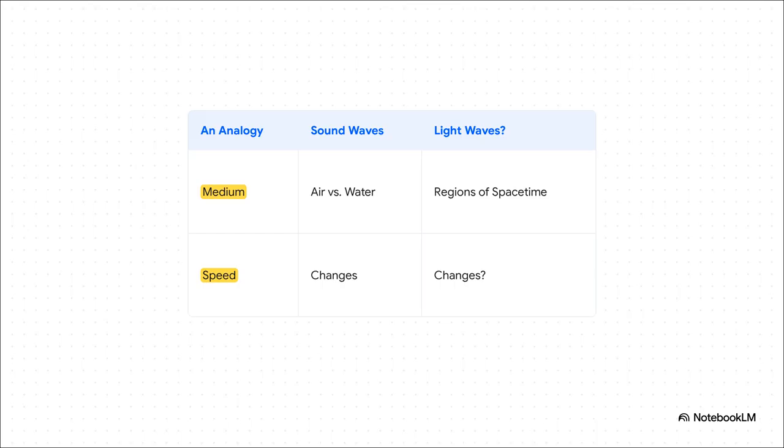Think about the speed of sound. We all know it travels at one speed through the air, but it travels way faster through water. Why? Because the speed depends on the medium it's traveling through. Well, this new theory proposes something kind of similar for light, that space-time itself isn't totally empty. It's filled with a dynamic field that can change the effective speed of light.